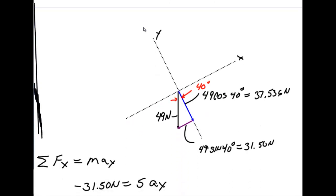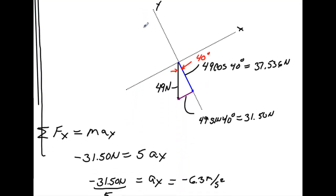Alright. So what I did here, I broke this into the components. I got 49 Newtons coming down. I got the two components. This one would be 49 Newtons times the cosine of this angle here. I think it's going to give me 37.536 Newtons here. Here I have 49 Newtons times the sine of 40. That gives me 31.5.